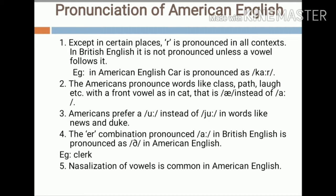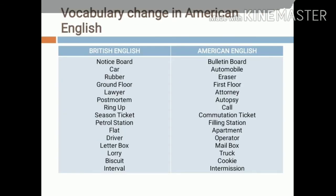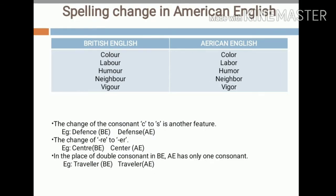In vocabulary there are also changes in American English compared to British English. For the British English word 'noticeboard,' the American English word is 'bulletin board.' For 'car,' Americans say 'automobile.' For 'rubber,' Americans say 'eraser.' For 'ground floor,' Americans use 'first floor.' For 'lawyer,' Americans use 'attorney.' For 'post mortem,' they use 'autopsy.' For 'ring up,' the American variety is 'call.' For 'season ticket,' the American variety is 'commutation ticket.' For 'petrol station,' Americans use 'filling station.'